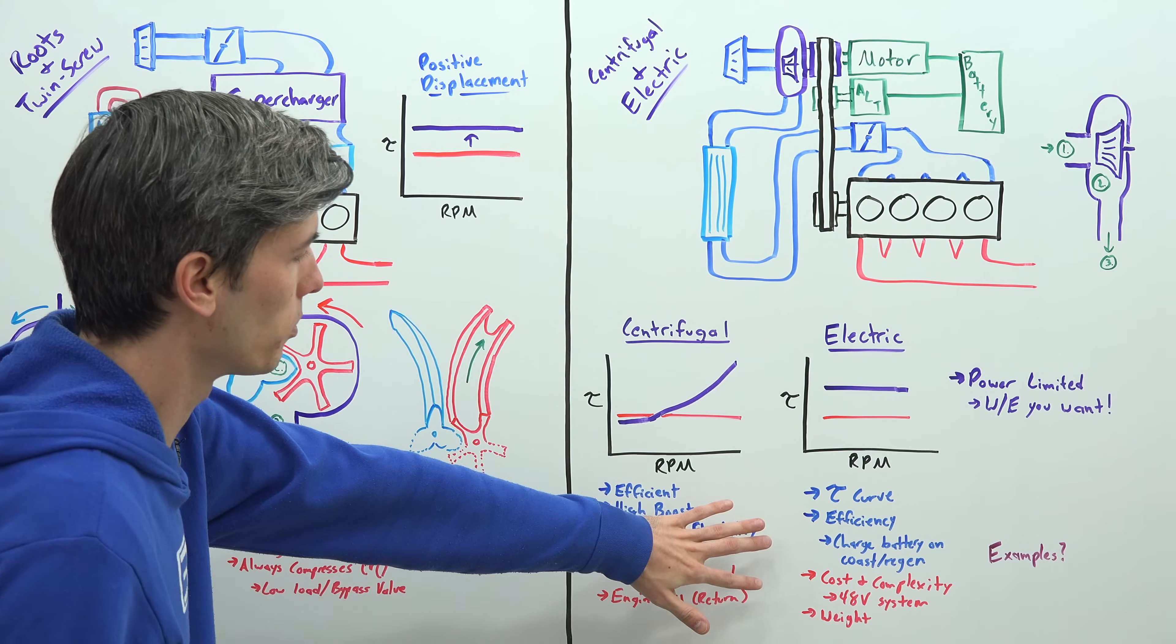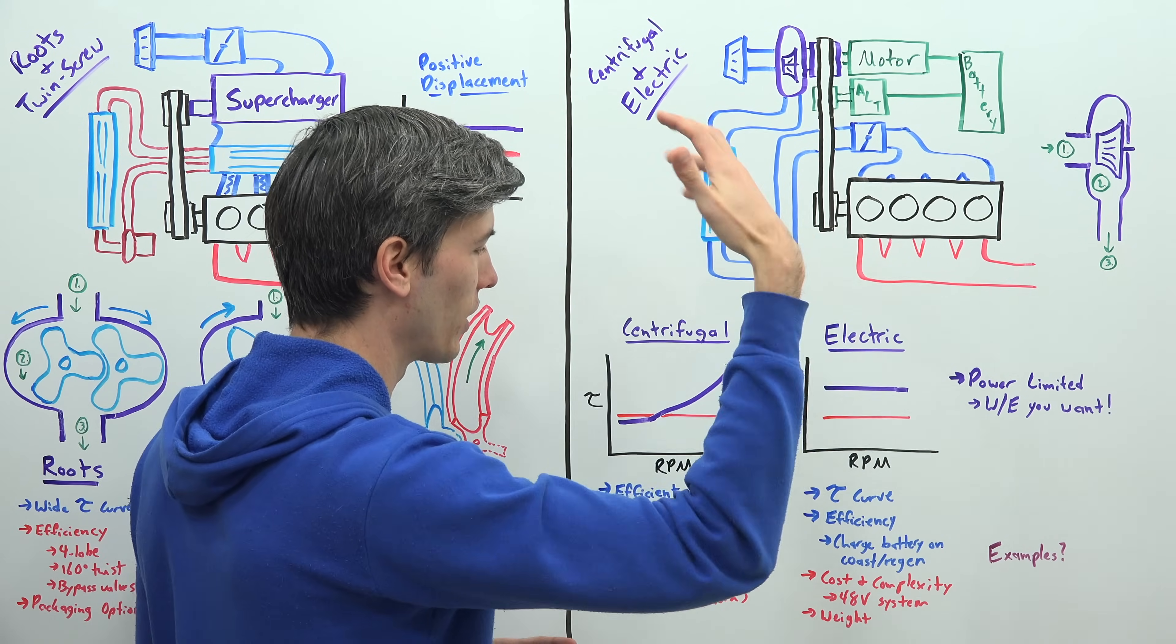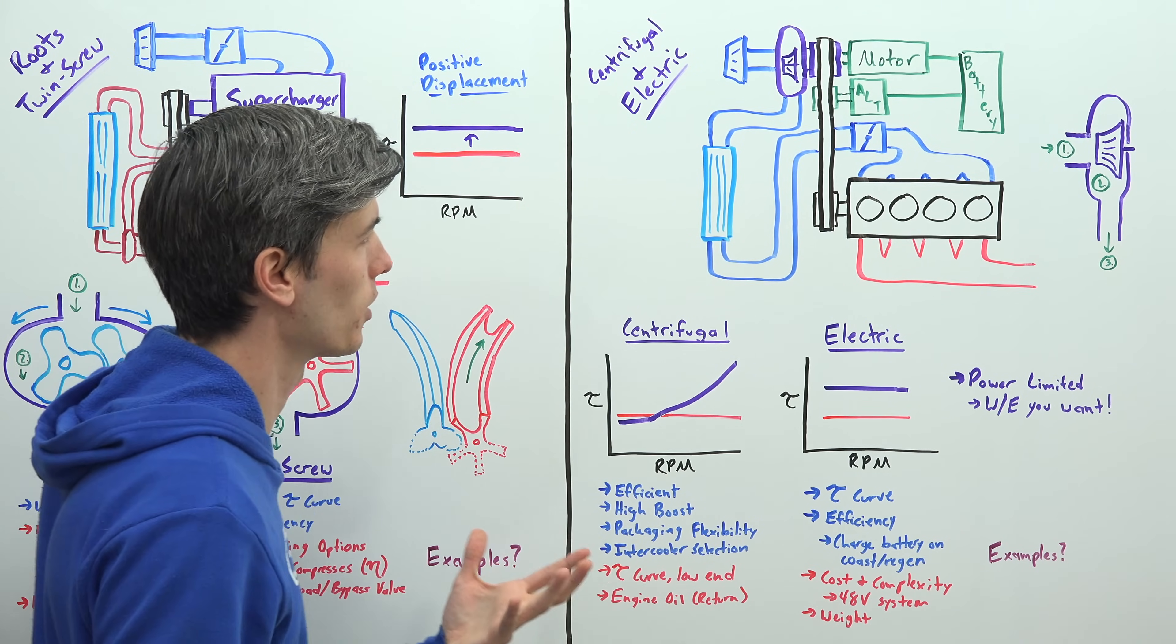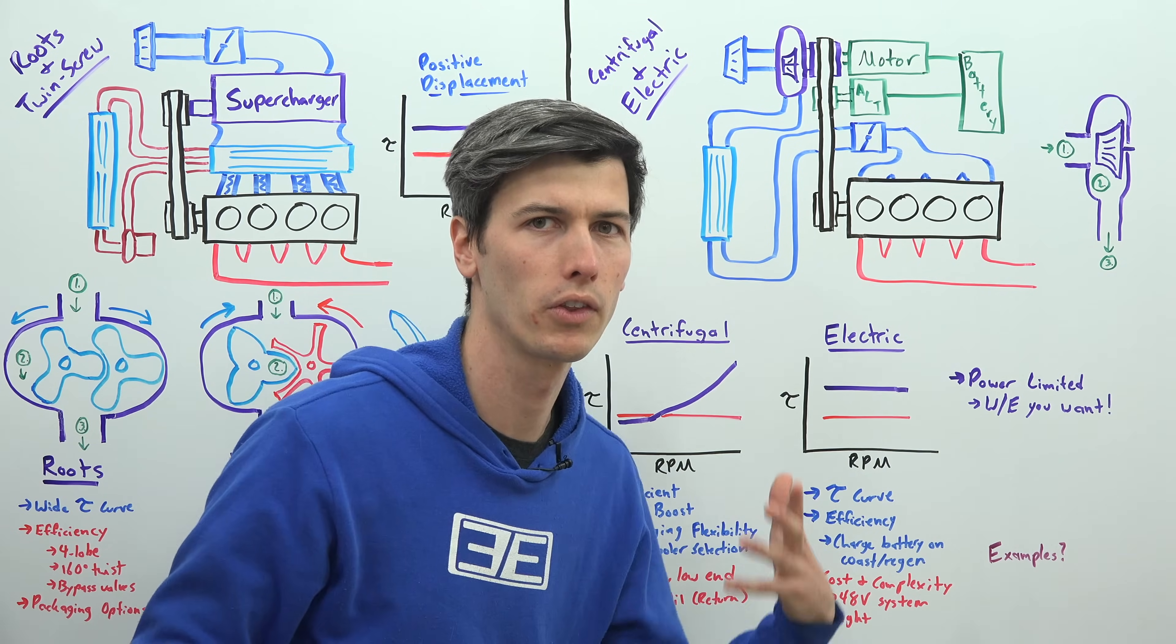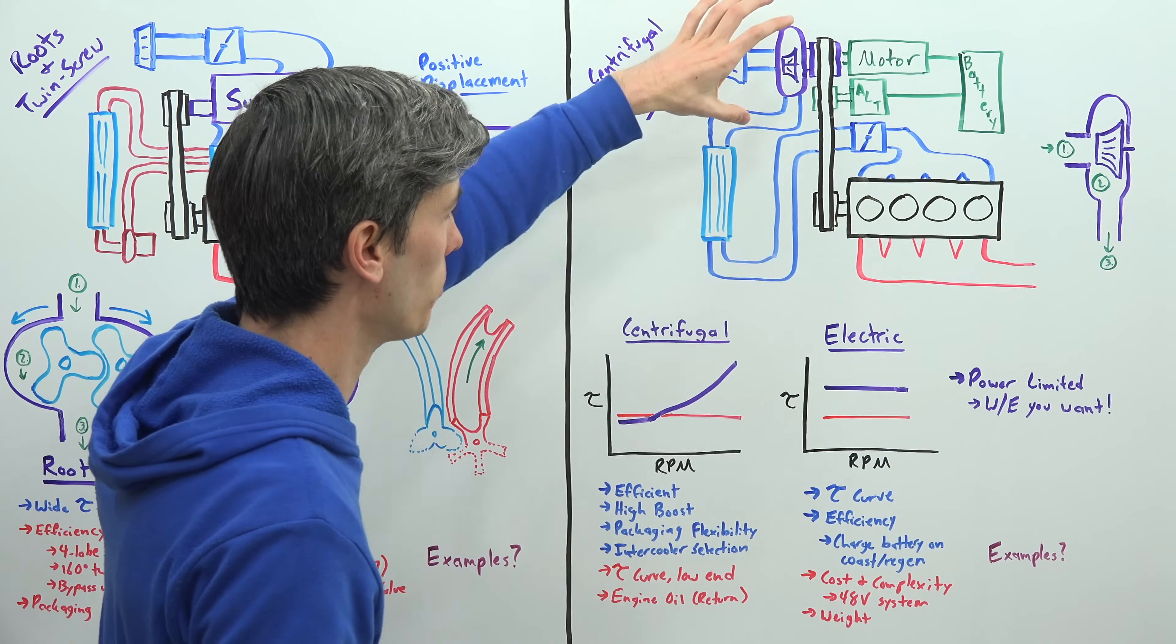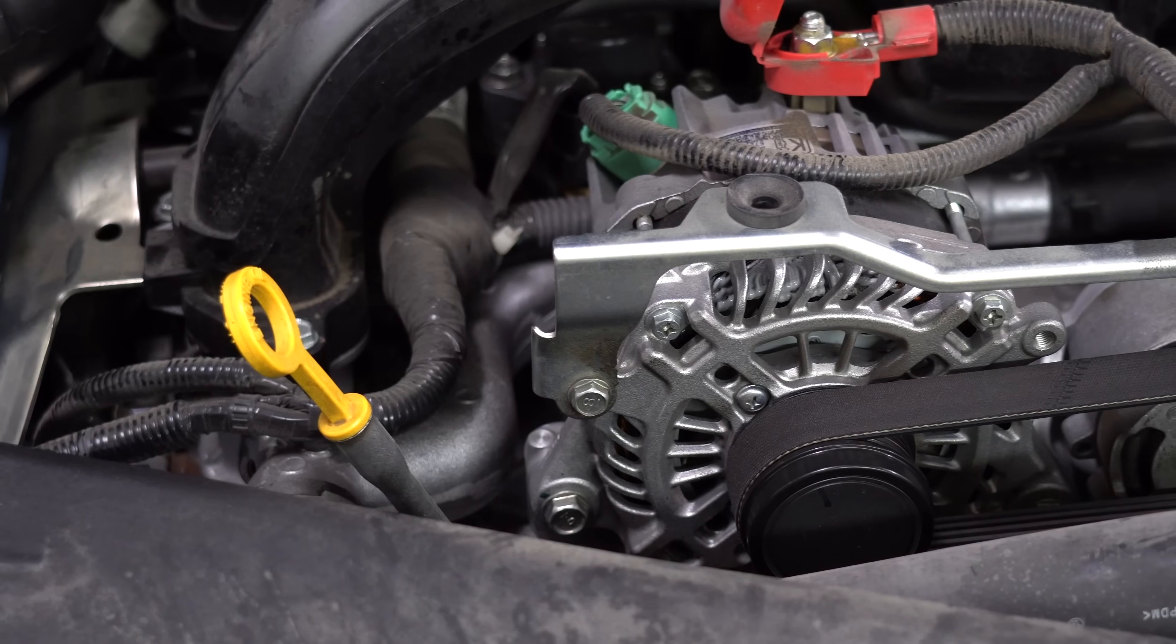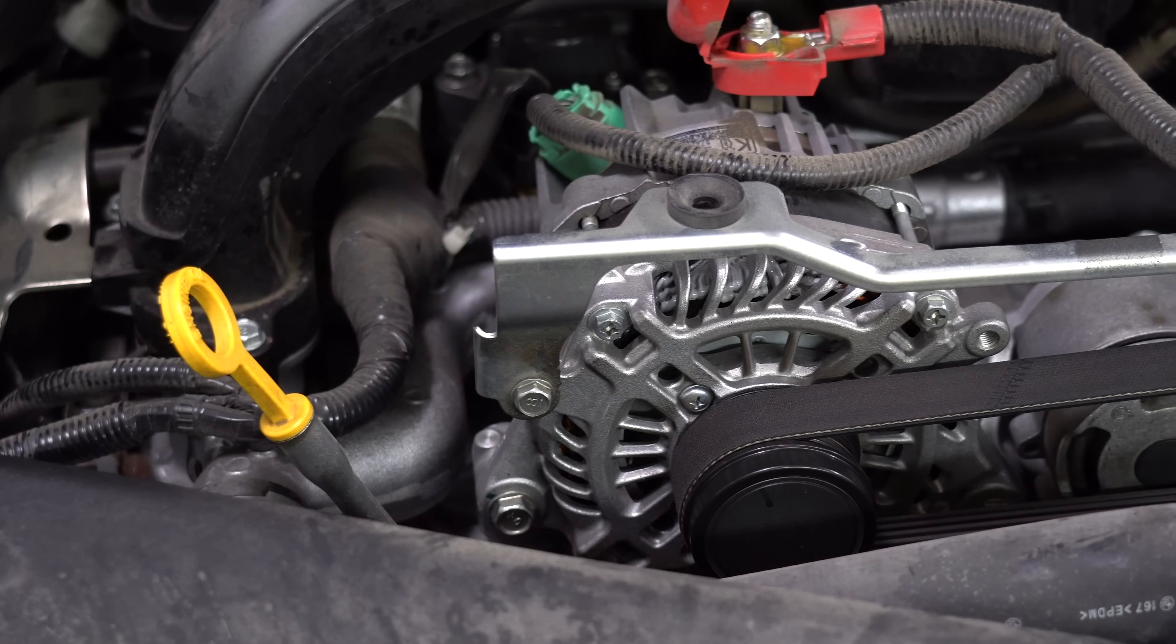Now some disadvantages of course being the cost and complexity of adding this system on. You're going to need a 48 volt system so that you can get the kind of power you need to actually build useful boost pressures. And there's of course a weight associated with adding all of this complexity as well, and the battery, the alternator, the beefier alternator, and the motor associated with it.